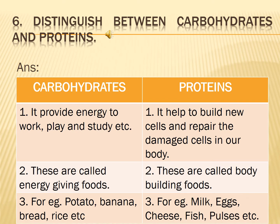Question number 6: Distinguish between carbohydrates and protein. Carbohydrates: First, it provides energy to work, play and study. Second, these are called energy giving foods. Third, for example, potato, banana, bread, rice etc.